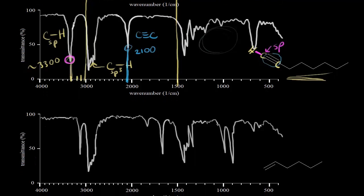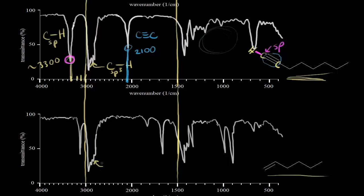Now let's look at one more comparison — a spectrum for an alkene, specifically 1-hexene. We draw a line around 3,000 and around 1,500. Below 3,000 we see the sp-3 C-H stretch as expected, but there's also a signal right around 3,100 wave numbers. That signal at approximately 3,100 represents a carbon-hydrogen bond where the carbon is sp-2 hybridized.